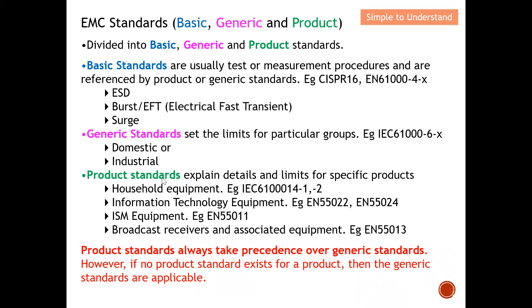For example, a product standard may specify that we also need to test certain basic standards. Typically, basic standards are referenced by product or generic standards to define more specific testing. Under basic standards, we have types such as IEC 61000-4-2 or EN 61000-4-x series — these cover all the basic EMC tests.